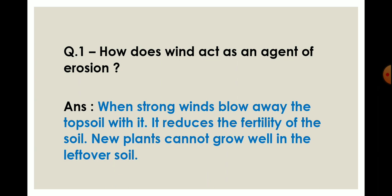The answer is: when strong winds blow away the top soil, it reduces the fertility of the soil. New plants cannot grow well in the leftover soil. Strong winds carry away the top soil, which is the most fertile layer.